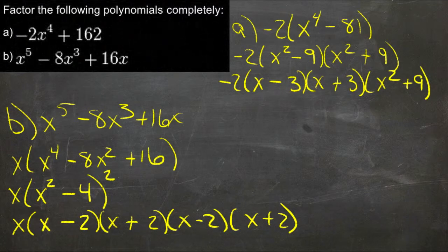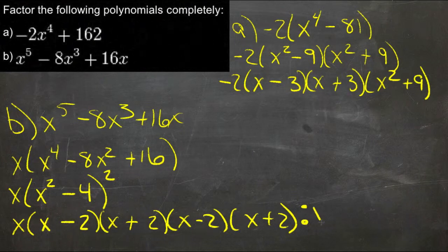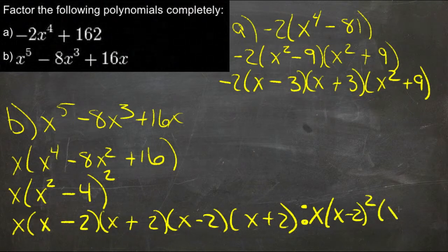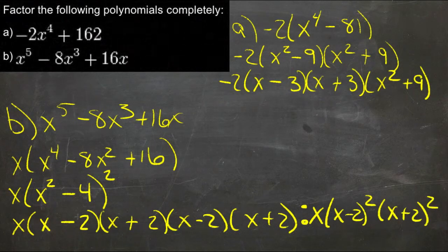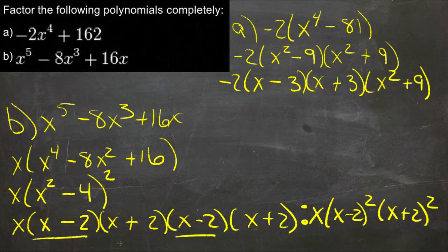We could actually simplify that a little bit farther if we wanted to, but we could simplify it just a little bit by saying x times (x minus 2) squared times (x plus 2) squared, because we really had two of each of those we can see here.